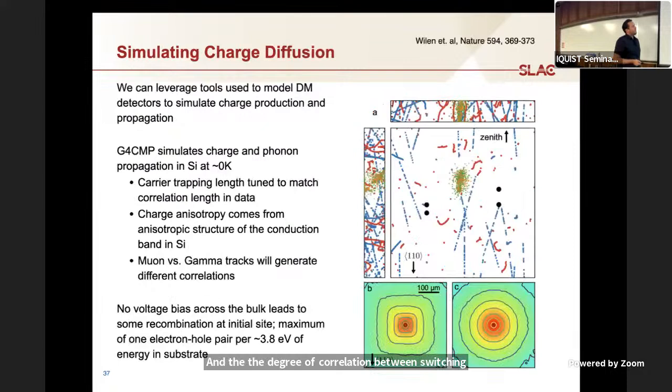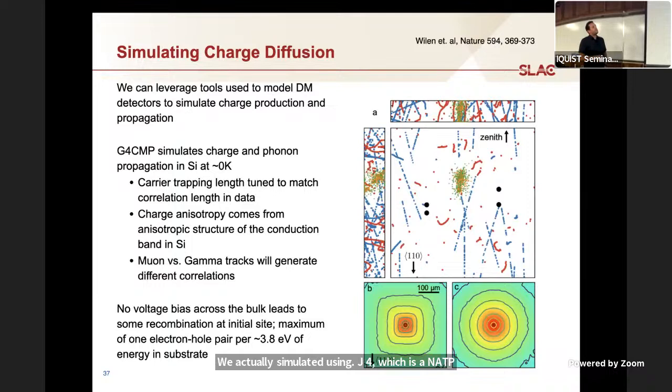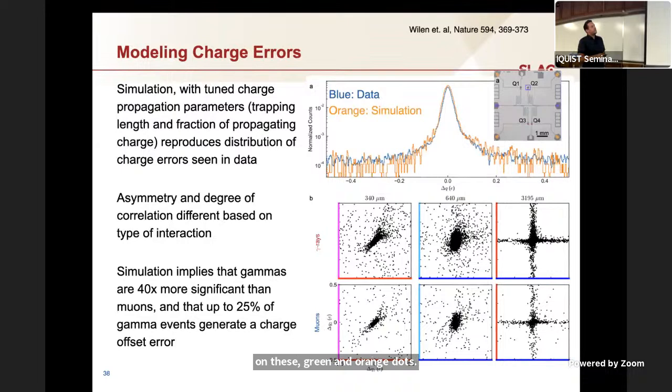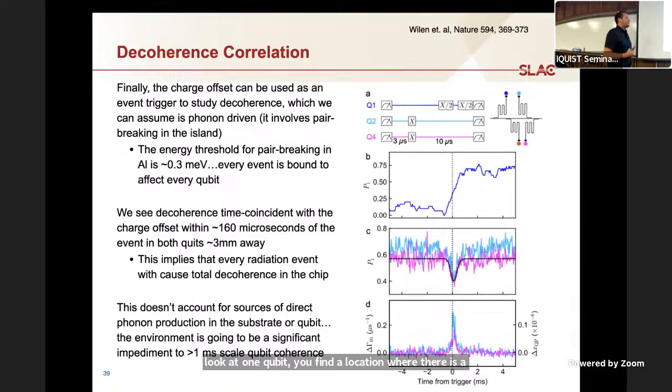What you find is, for a lot of them, there are these correlated switching events. The degree of correlation between switching events correlates also with the separation between qubits. We took this a step further, we actually simulated using JN4, which is an ATP software, muon and gamma events in the substrate relative to these four qubit locations. We drifted the subsequent charge from the initial events shown in these green and orange dots. This is electron hole diffusion. We were able to replicate with just data simulating radiation events, all of the interesting spatial correlations in qubit errors. This is showing that at least for the spatially correlated errors, this is charge mediated.